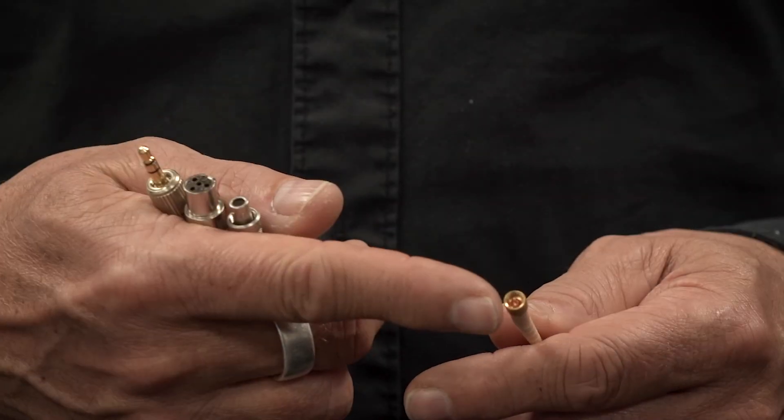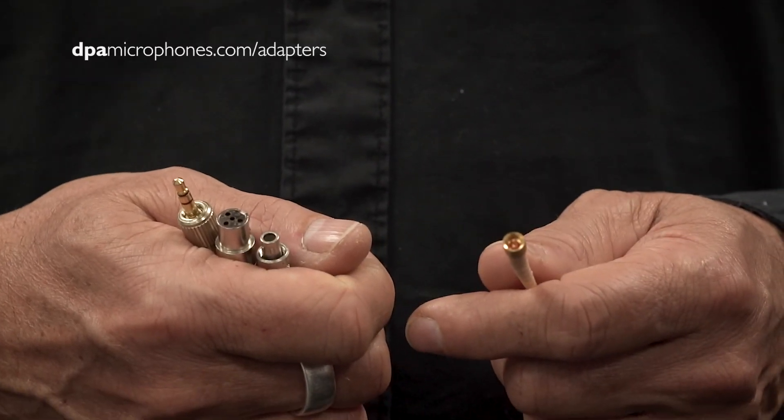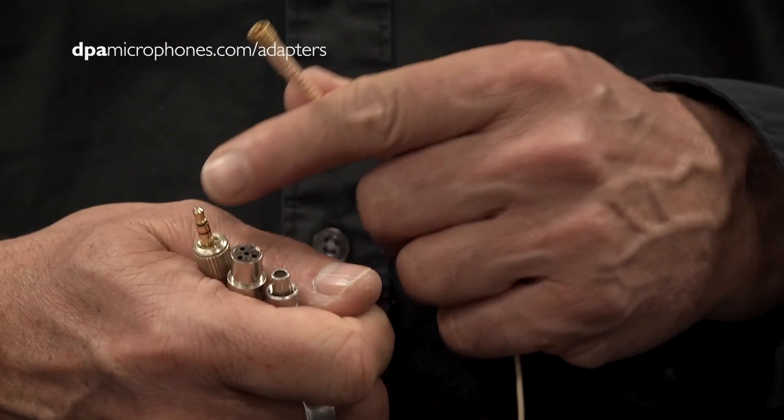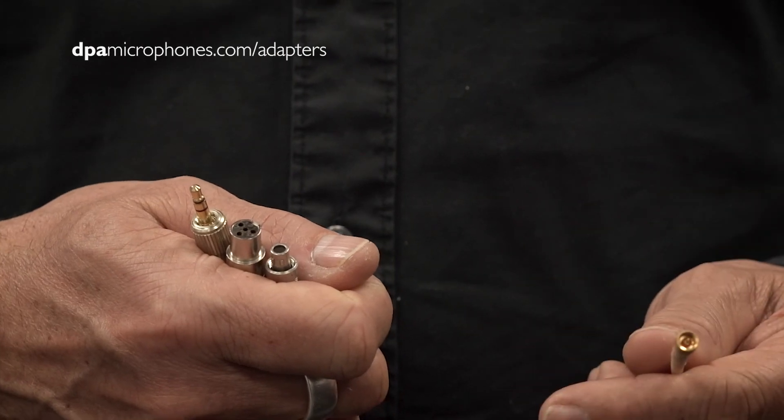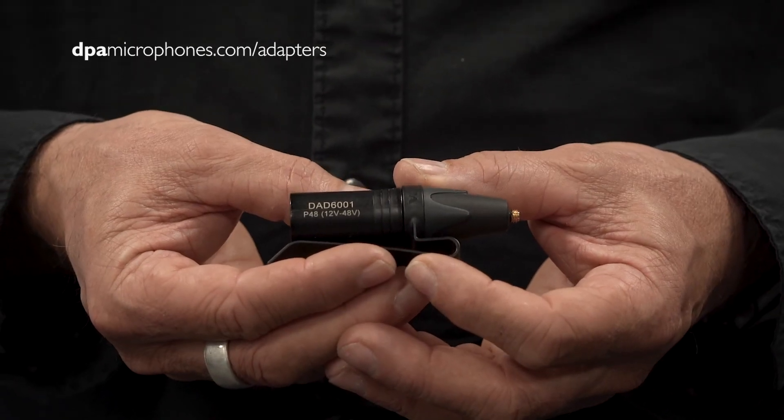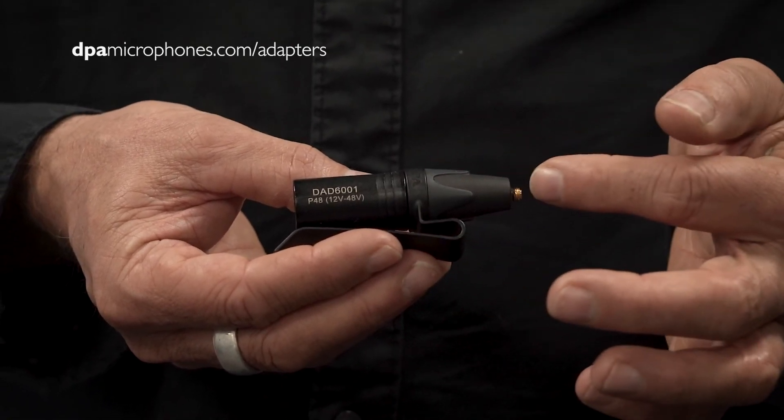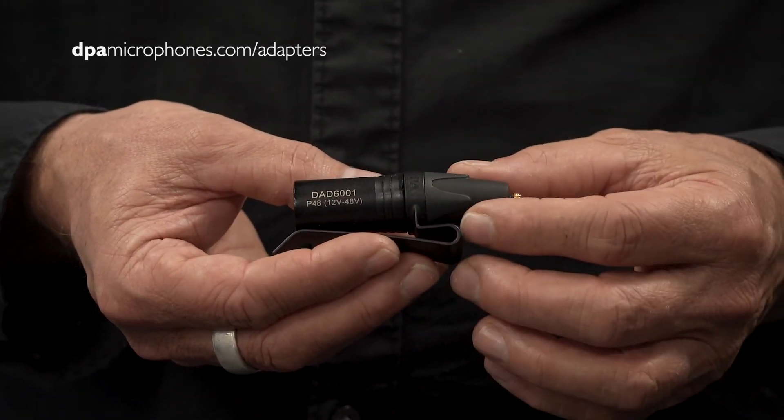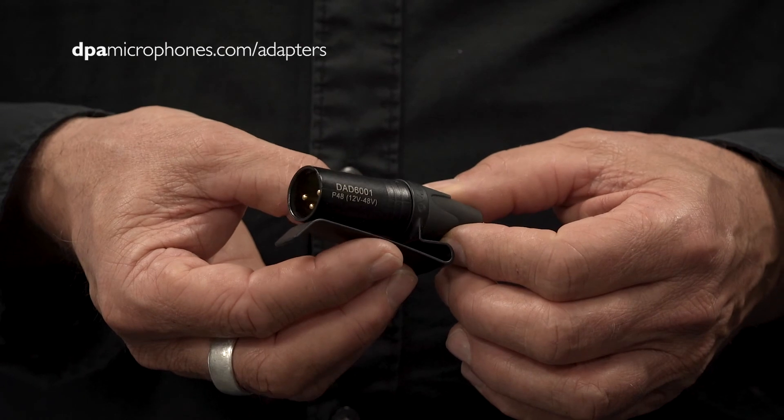All DPA mics are delivered with either micro dot or any of the three standard connectors for wireless systems. If you wish to connect your headset directly to a 12 to 48 volt phantom power supply, you should use this phantom power adapter, the DAD6001.